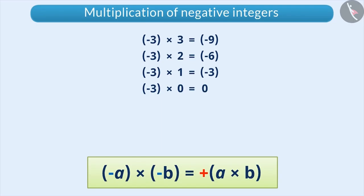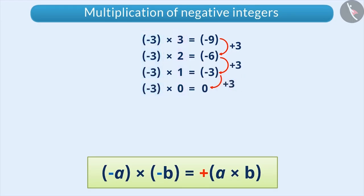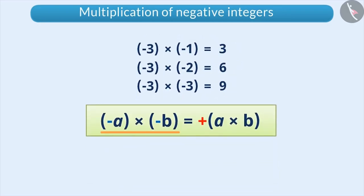You can understand it with the following pattern. As you can see here, the first number is as it is and the second number is decreased by 1, due to which the result is increasing by positive 3. Adding 3 to minus 9 gives minus 6, adding 3 to minus 6 gives minus 3, and adding 3 to minus 3 gives 0. Similarly, adding 3 to 0 gives 3, adding 3 to 3 gives 6, and adding 3 to 6 gives 9. By this pattern, you can understand that multiplication of any two negative integers is always a positive integer.